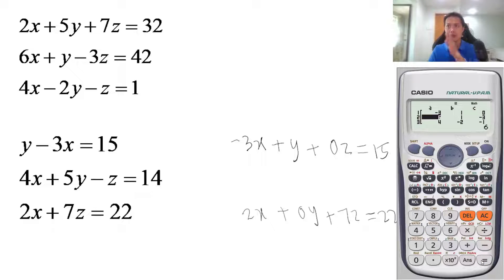So you can write over. Okay, now the second equation is four x, so you press four equals, five y, five equals, z is negative one equals, and lastly you have 14 equals.